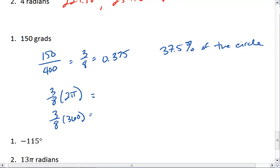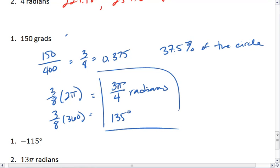Three-eighths times 2π gives me 3π over 4 radians. And three-eighths times 360 will end up giving me 135 degrees. So 150 grads is the same as either 3π over 4 radians, or 135 degrees.